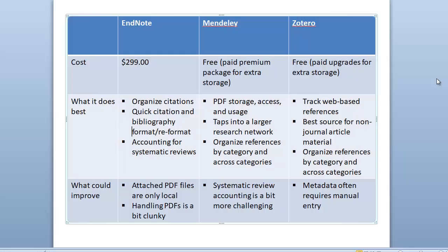Zotero does really well at tracking web-based references and is the best tool for non-journal article material. Both Zotero and Mendeley allow you to organize references by and across categories. As for what could improve: EndNote's PDFs are only local and a bit clunky. Systematic review accounting in Mendeley or Zotero doesn't work quite as well. And in Zotero, you often have to manually enter your metadata.